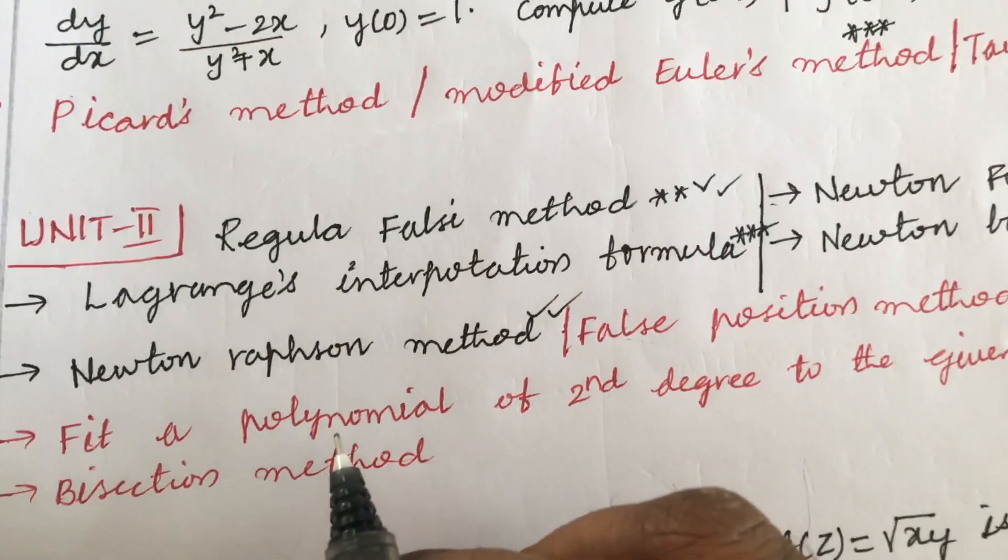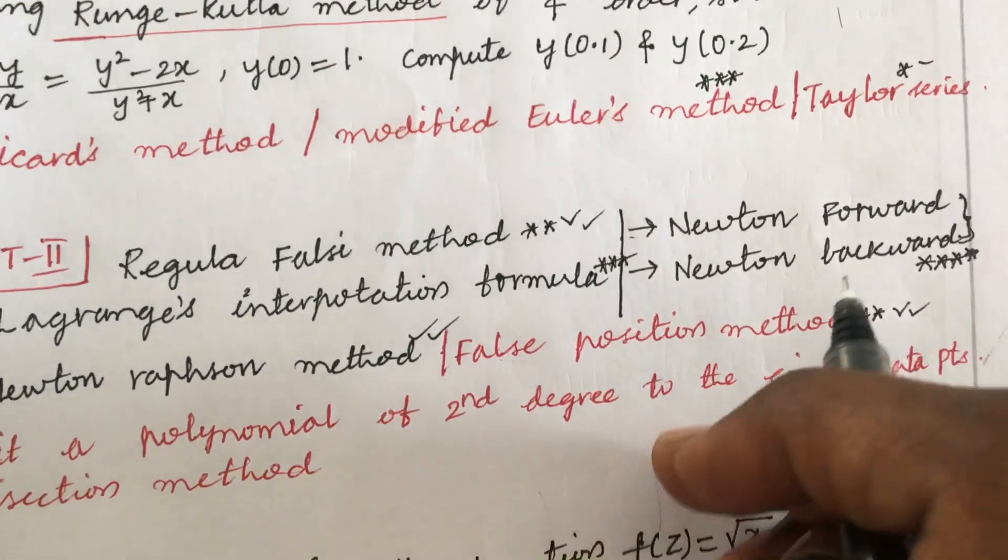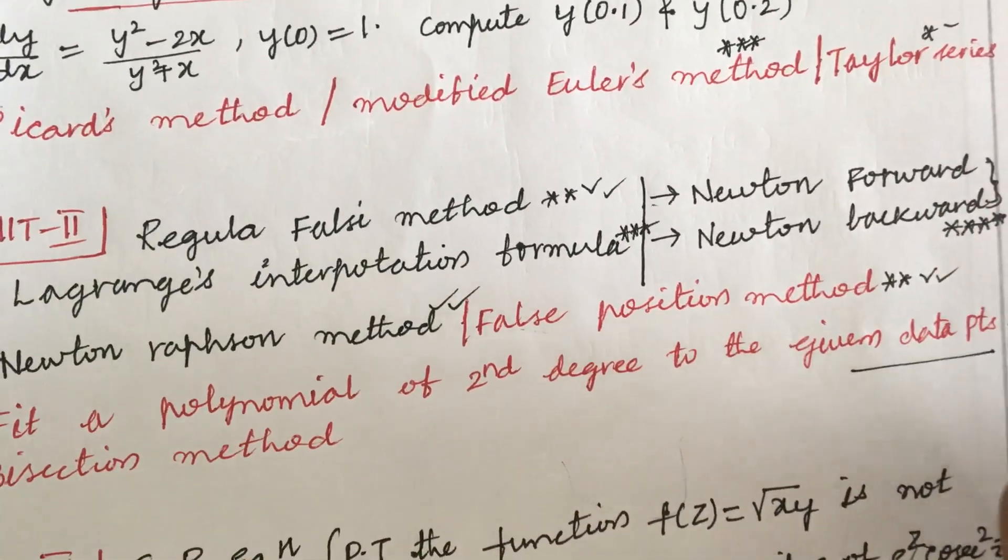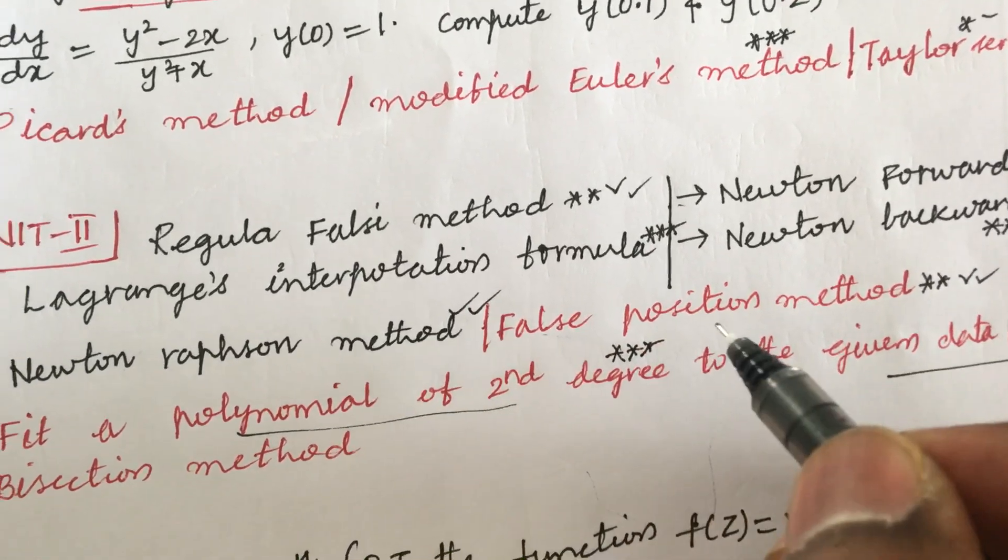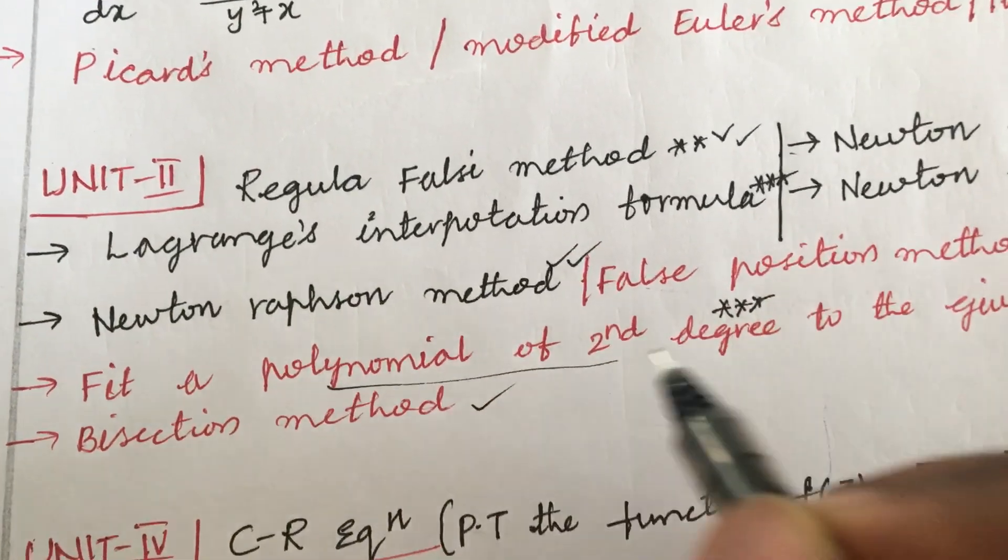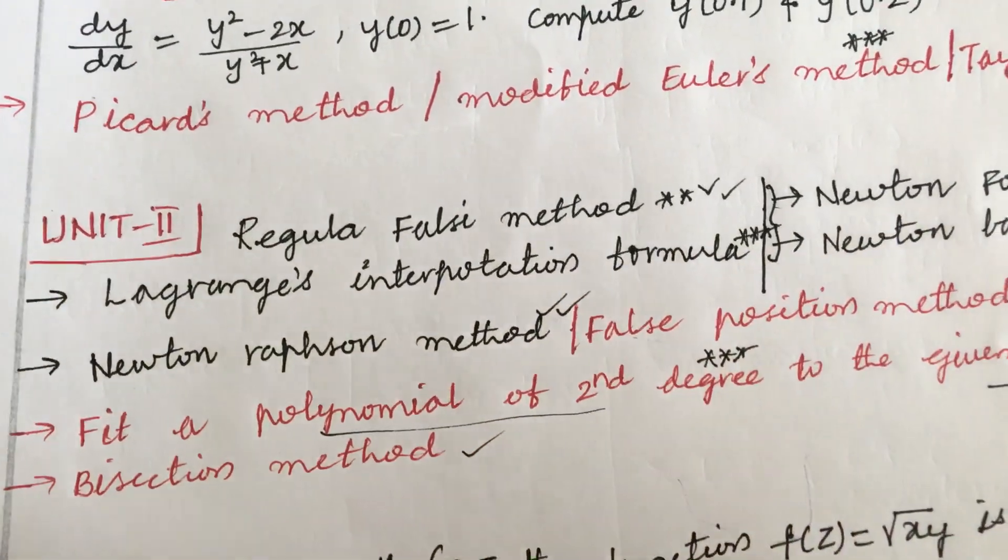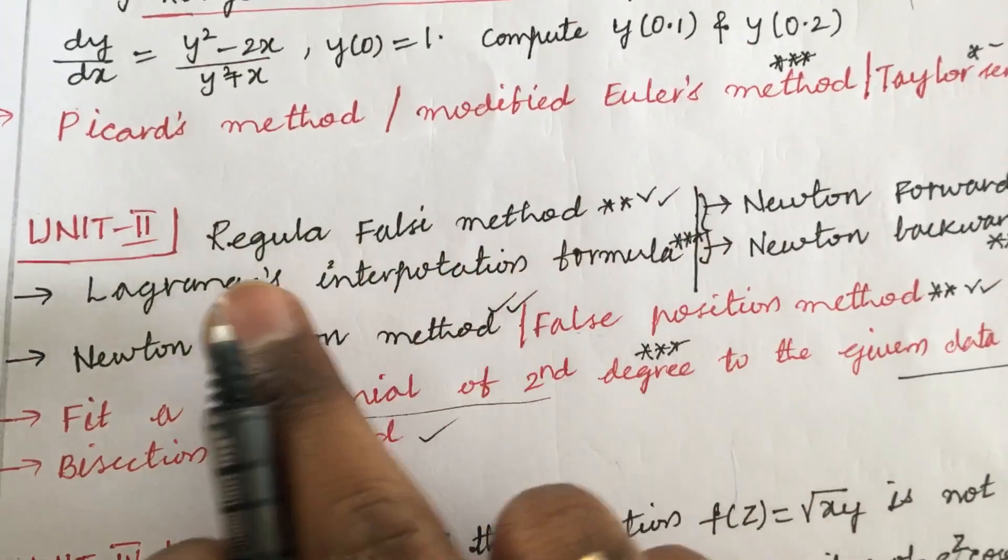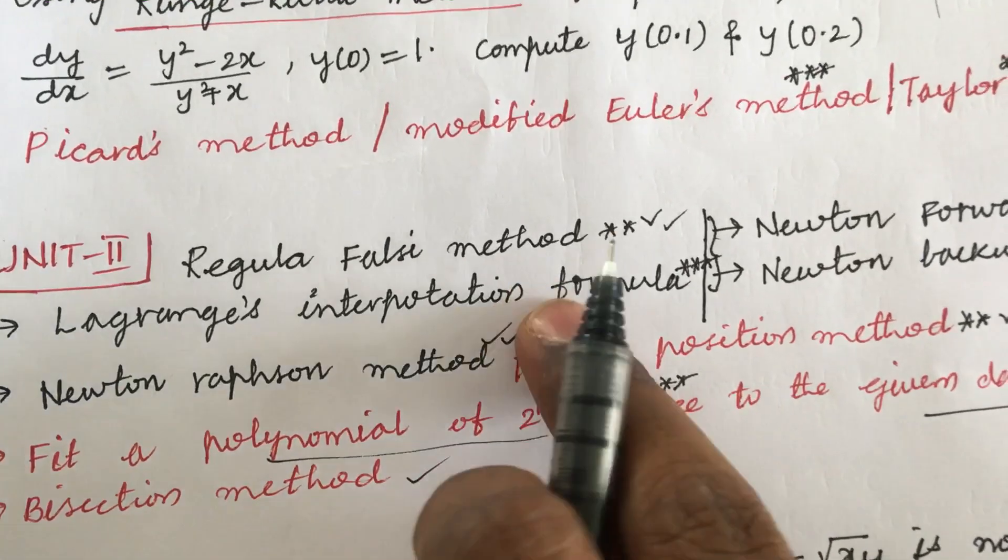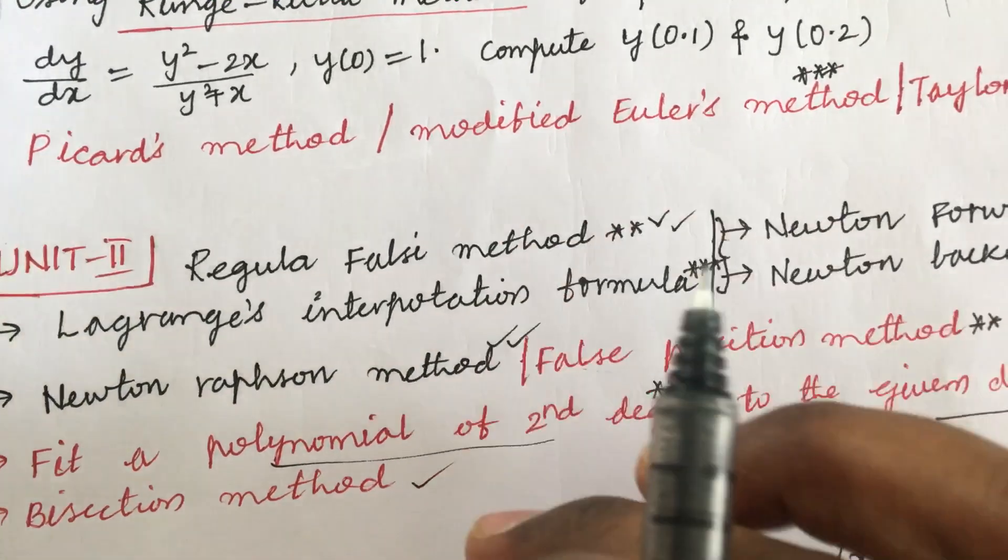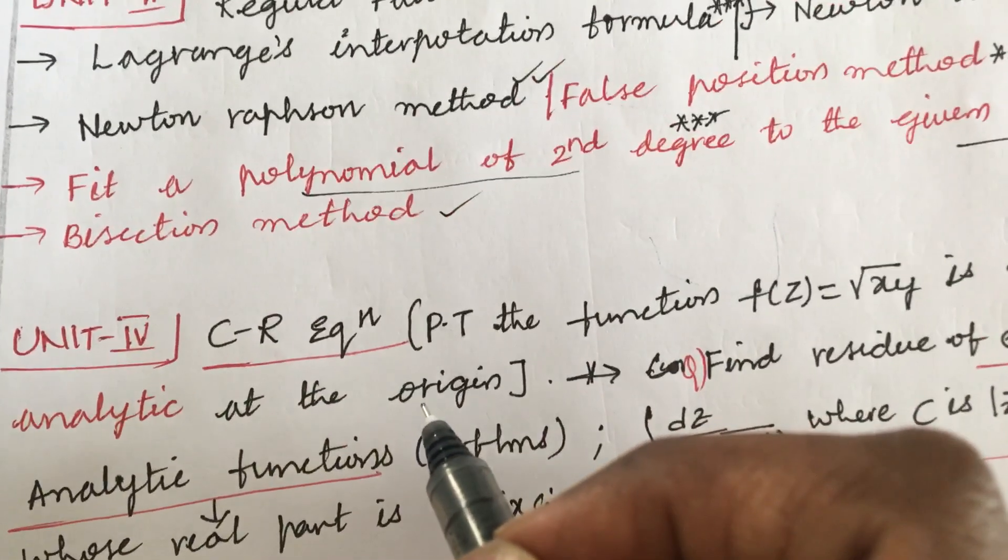False position method using false position method you will be getting the short question this time. One more important question is that fit a polynomial of second degree to the given data points, certain data points will be given, you need to fit the polynomial of the second degree. This is the top most question which may occur in the short question. And the bisection methods from these two I can expect one question. You need to write even either the first question or the second question only, do not mix up and write dear students.